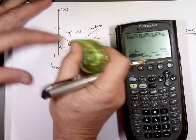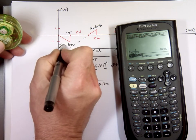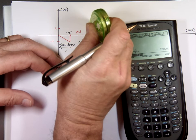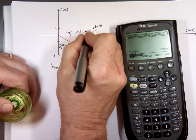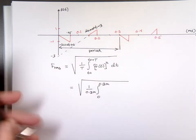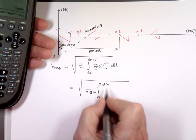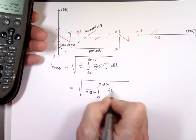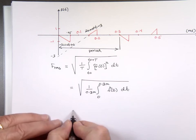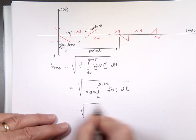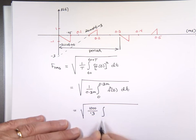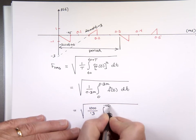I always hated those millis and micros. So the slope is negative 20,000 for the first piece, and 20,000 for the second. The RMS integral becomes 1,000 over 0.3 — that's really 1 over 0.3 milli — times the integral from 0 to 0.05 milli, plus the integral from 0.15 milli to 0.2 milli.